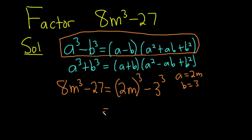Then you just plug in the numbers. It'll be 2m minus 3, a minus b. And then a²—that's your (2m)². So you square the 2 and you square the m. So 4m².